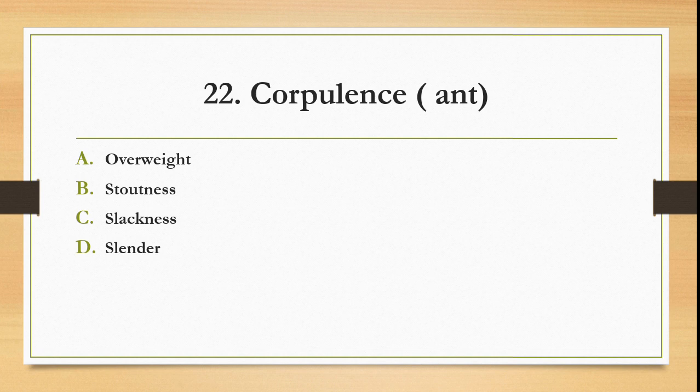Stoutness is having a heavy body or being overweight. Fatty means that. Slackness is being less active, doing work very slowly. Slender is a slim body. Here it is asked to be the antonym of corpulence. What is the antonym of corpulence? It will be slender.